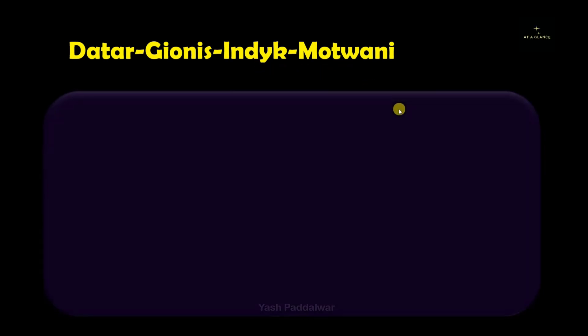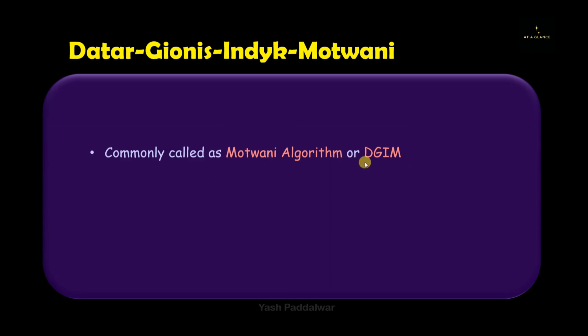The algorithm is called the Datar-Gionis-Indyk-Motwani algorithm. The name is pretty long and difficult, so there is a shorter version. The algorithm is commonly called the Motwani algorithm or DGIM.